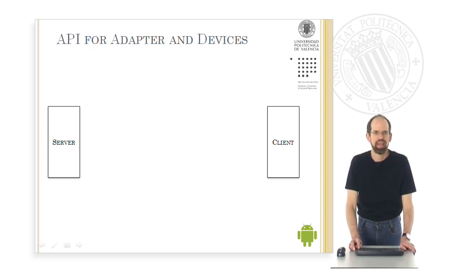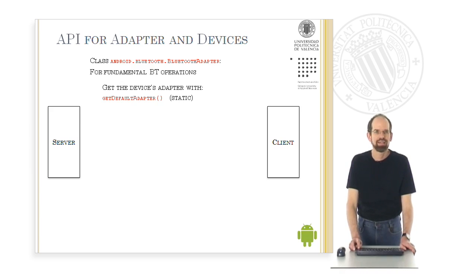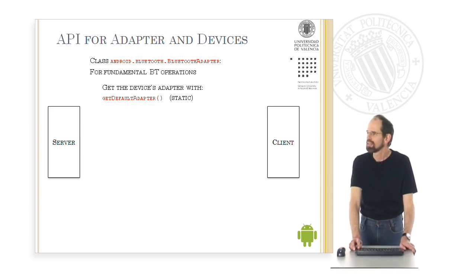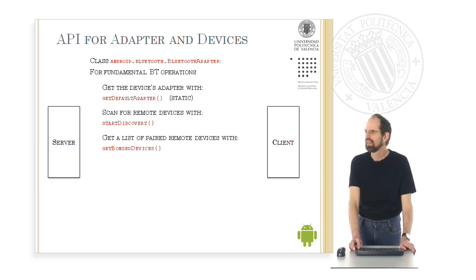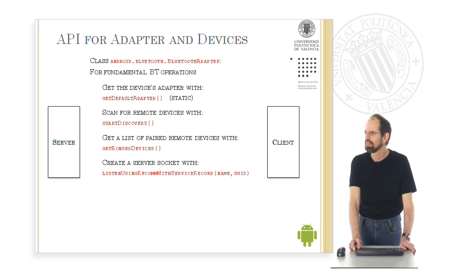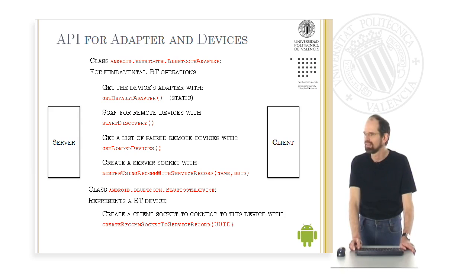There is an Android API for adapters and devices defined by the Android Bluetooth package. The class BluetoothAdapter is used for fundamental Bluetooth operations. A static method called GetDefaultAdapter gets the device's adapter. The method StartDiscovery scans for remote devices, GetBondedDevices gets a list of paired remote devices, and finally — with a very long name — ListenUsingRFCOMWithServiceRecord creates a server socket with a specific name and UUID.